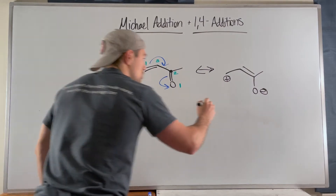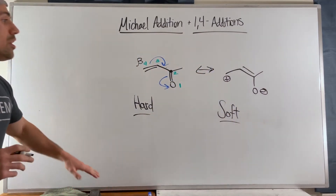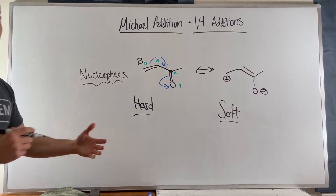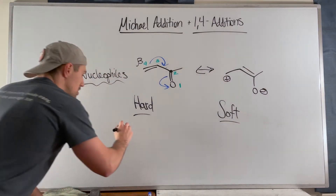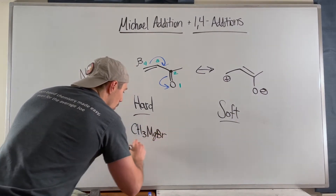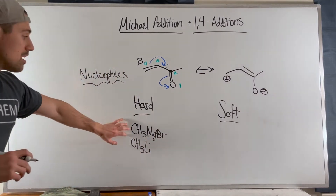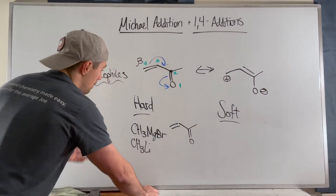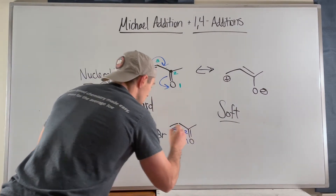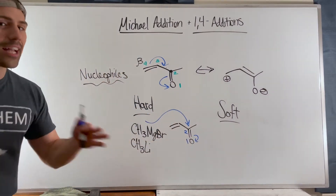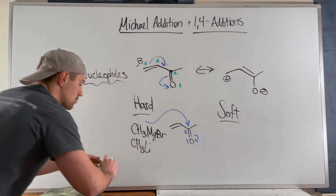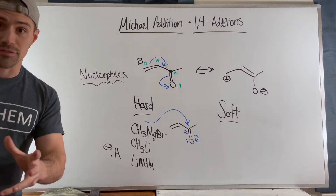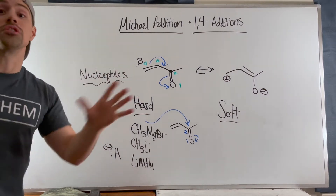We can have two classes of nucleophiles: hard or soft. Hard nucleophiles are the ones you're used to — Grignard reagents like CH₃MgBr, organolithiums like CH₃Li, and hydride (H⁻) from lithium aluminum hydride. Given an alpha-beta unsaturated carbonyl, hard nucleophiles like to do 1,2-additions. They're so reactive they stay honed in on the carbonyl carbon — that's what they care about.